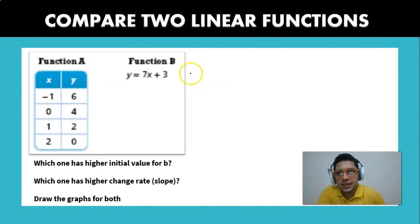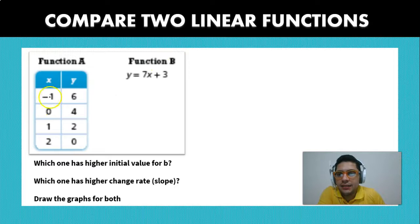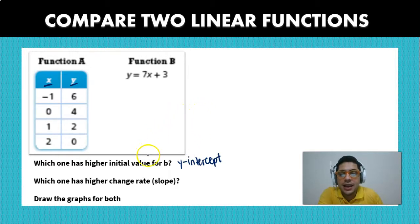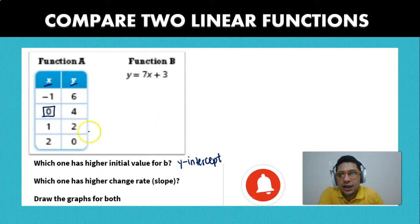Okay, so basically we can see that function A has a value of x and y and we're given a table. The initial value or value for b is going to be the y-intercept. Now guys you have to remember that the y-intercept is actually when the graph has a value of x equal to 0. So that means that our y-intercept is going to be y equal to 4.